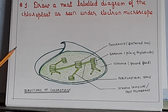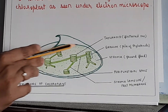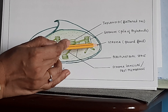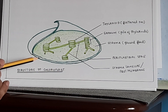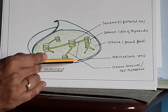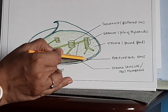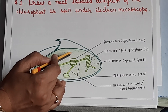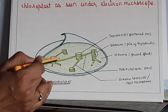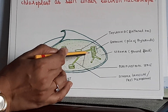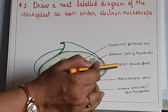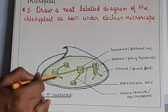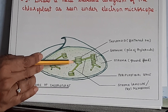The chloroplast is an oval-shaped organelle with a double membrane — an outer membrane and an inner membrane. The space between these membranes is called the periplastidial space. It encloses a colourless ground substance called the stroma, also called stroma matrix. Embedded in this stroma are many coin-like structures arranged in stacks.